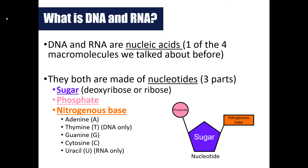Today we're going to talk about the structure and function of both of these nucleic acids. Both DNA and RNA are made of three parts — we call these nucleotides. Both DNA and RNA contain phosphate. They both contain sugar, but the sugar is going to be different between the two. And then they both contain four nitrogenous bases.